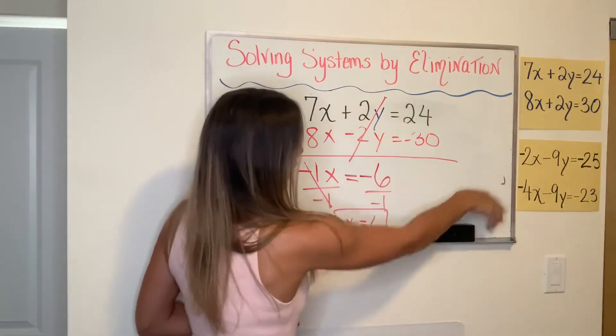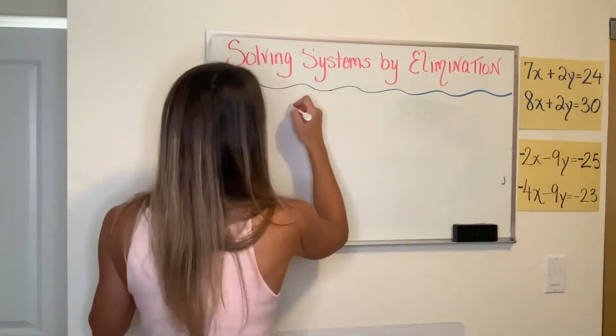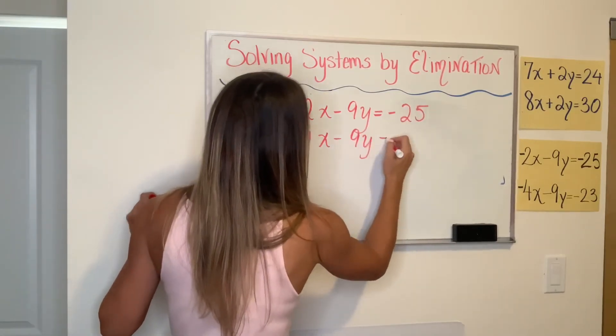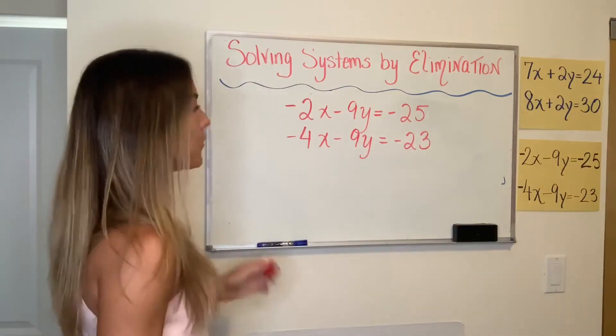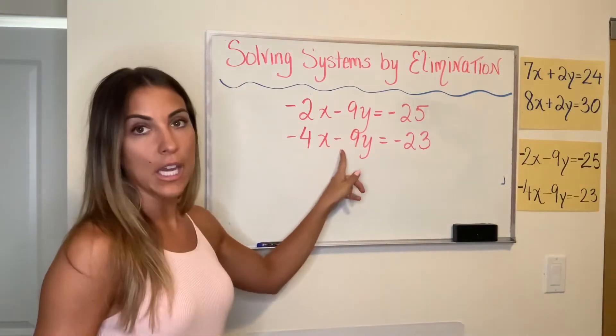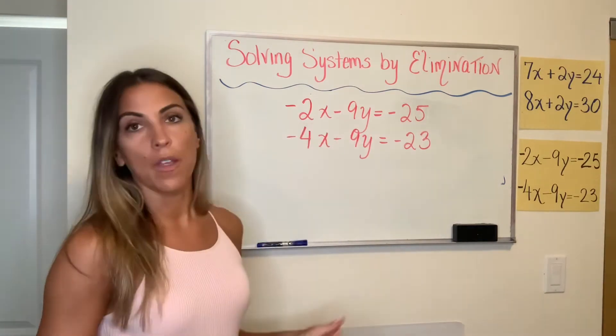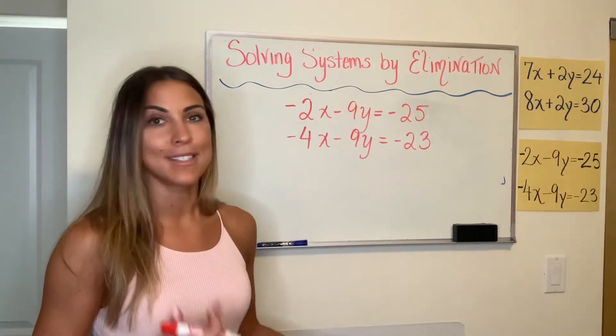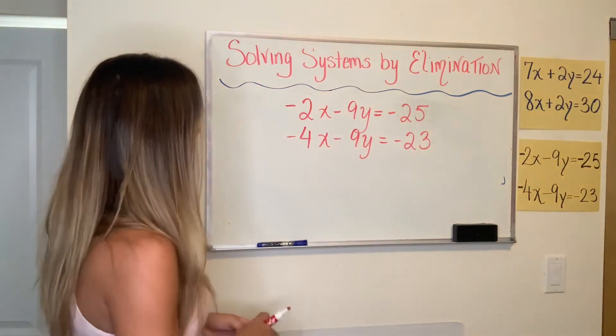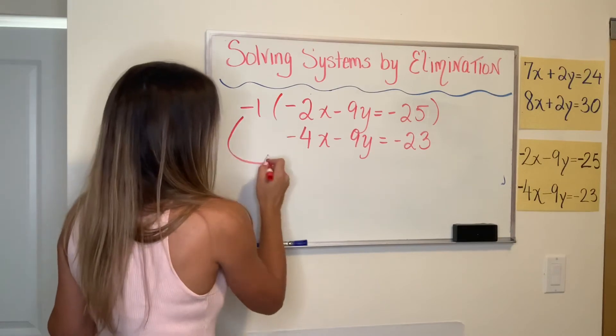And now I will very quickly go through this bottom example as well. So remember we have two different options. They have the same coefficient, negative nine and negative nine. So I can either subtract both of these equations, or I can multiply one of them by negative one and then add, which is technically the same exact thing. Subtraction is just adding the opposite of something. So let's do it by multiplying.